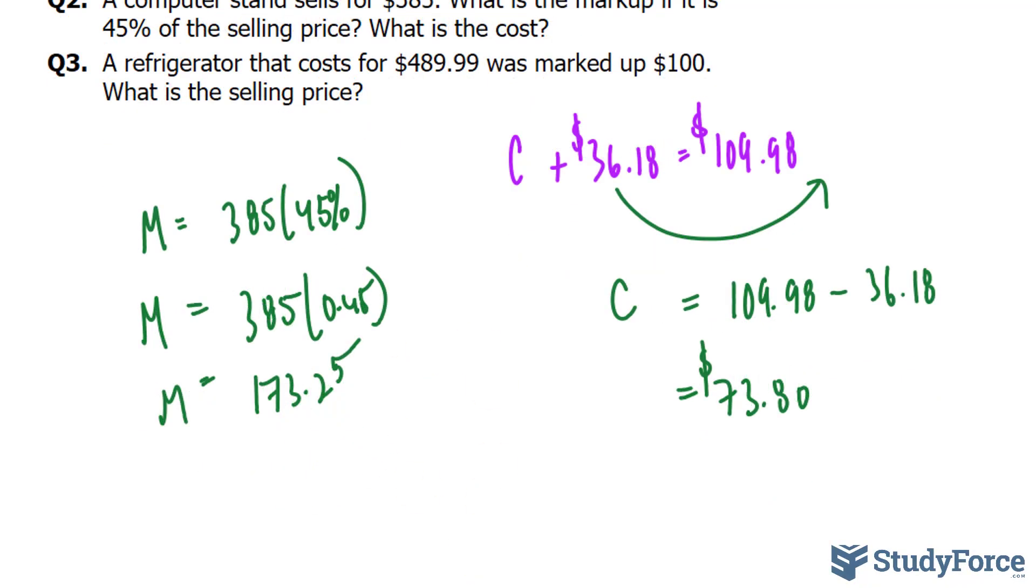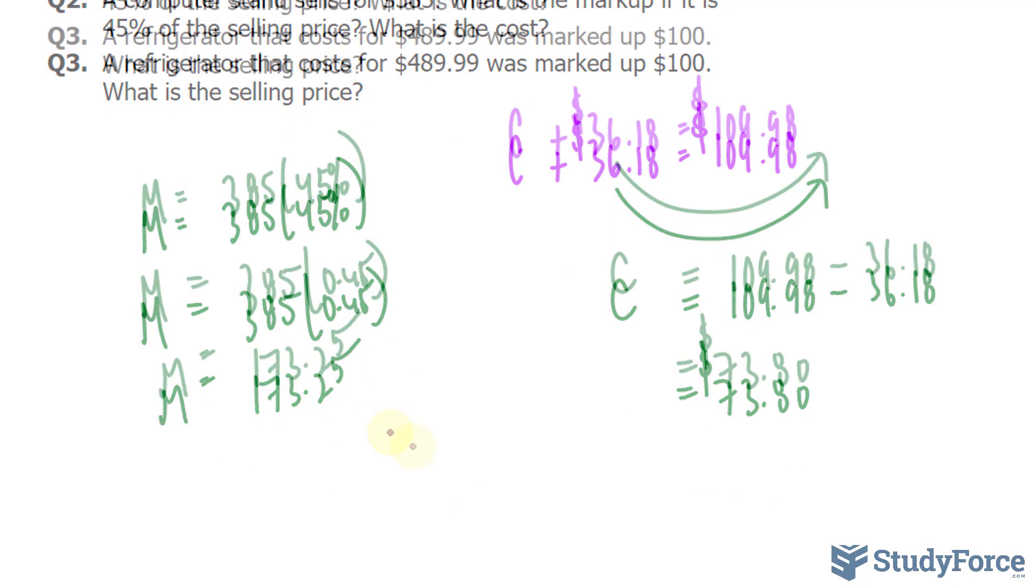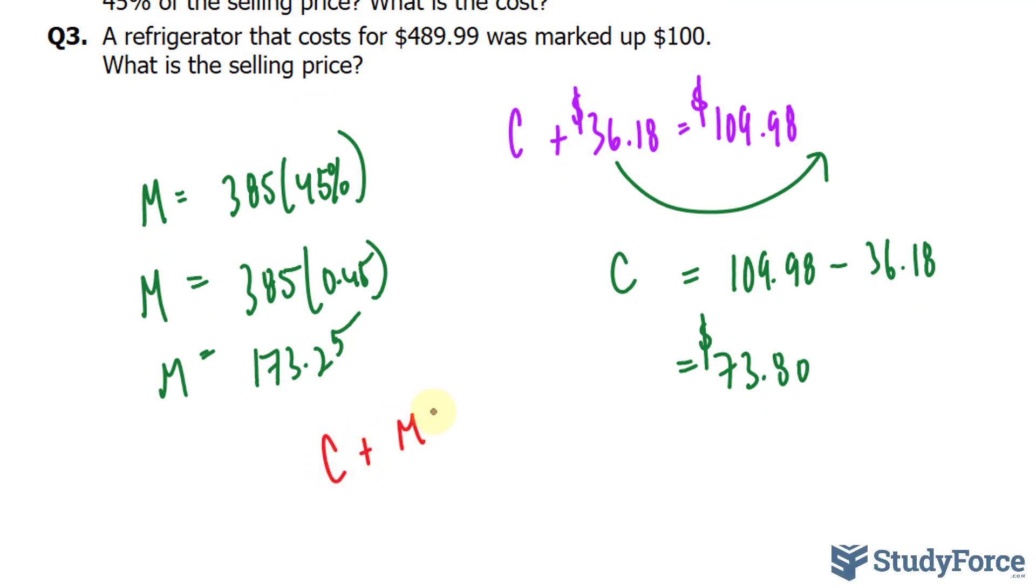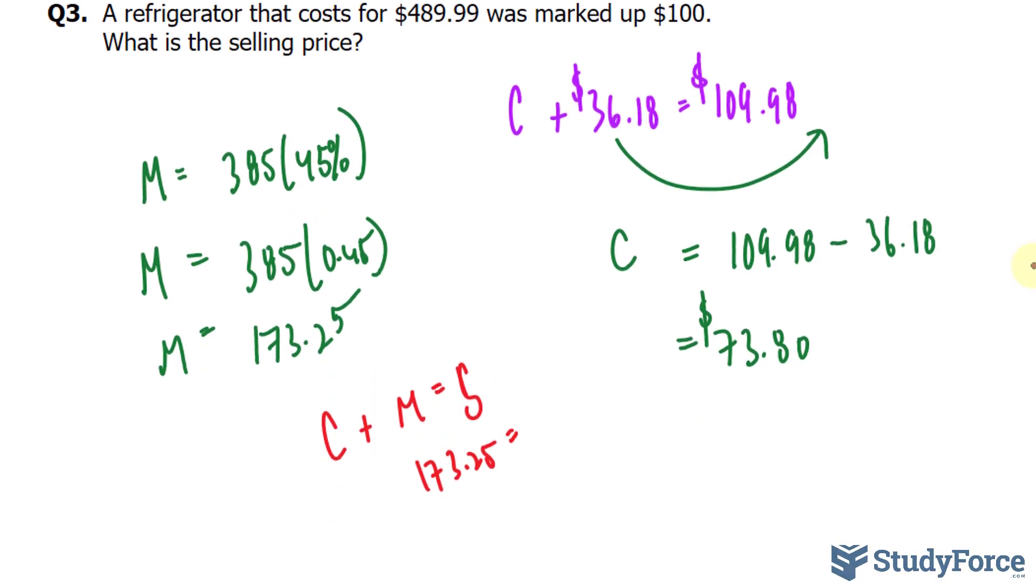They also want the cost that they purchased the item from the factory. So let's go ahead and rewrite that formula. We have C plus M is equal to the sell price. $173.25 is equal to $385.